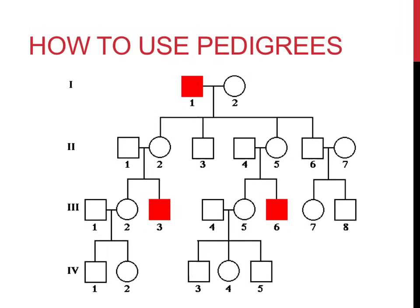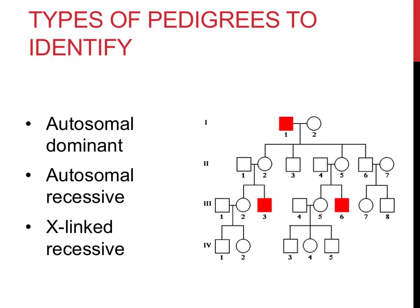With a large enough pedigree for a simple, single gene trait, you can apply knowledge of Punnett squares and probability to determine what pattern of inheritance a trait shows. I could determine that the pedigree on this slide is recessive and tell you the genotypes of half of the individuals in this family. There are three types of pedigrees that we'll be discussing in this video and identifying in class, listed here and explained through the upcoming slides.